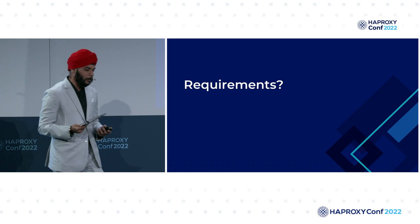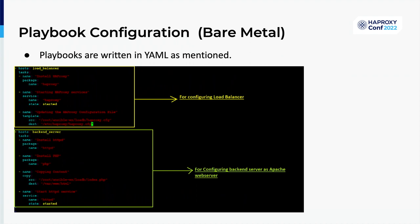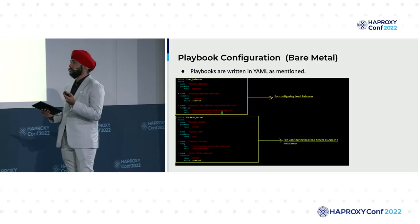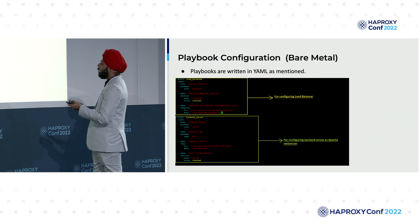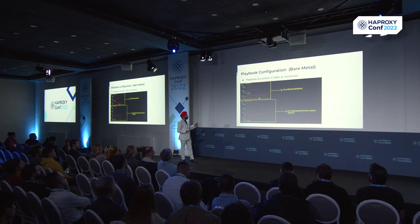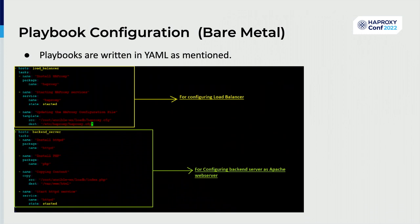Now let's look at the configuration for the bare metal. When it comes to Ansible, it's best to write down the steps in sequential order. Initially, we'll install HAProxy on the load balancer server, start the services, and update the configuration file. Next is configuring the web servers — using Apache web server and PHP, copying the PHP code content, and then starting the service. It's straightforward.